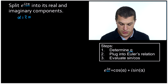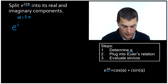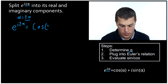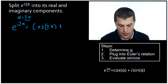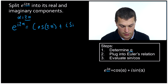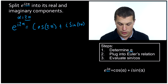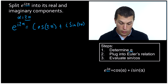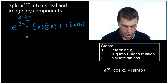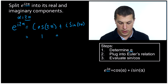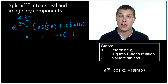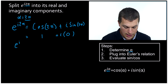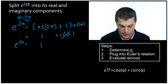Now we're going to rewrite Euler's relation. We know that e to the i times two pi is equal to cosine of alpha — which is two pi — plus i times sine of alpha, which is also two pi for this problem. Now we figure out what cosine of two pi and sine of two pi are. Cosine of two pi turns out to be one, and sine of two pi turns out to be zero. So e to the i times two pi is equal to one, because the imaginary term goes away since it's zero.